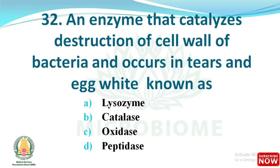Next question: an enzyme that catalyses the destruction of the cell wall of bacteria and occurs in tears and egg white is known as what? The options are lysozyme, catalase, oxidase, and peptidase. The right answer is option A: lysozyme.